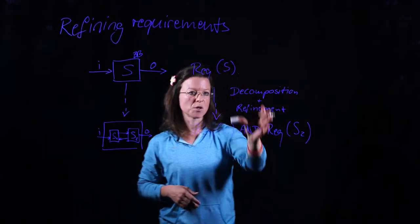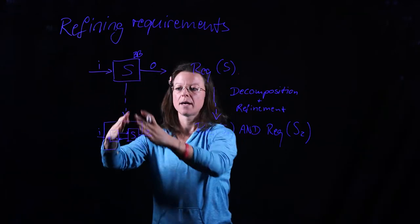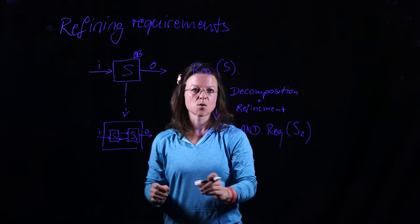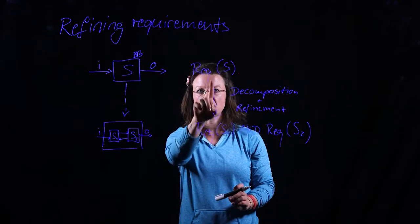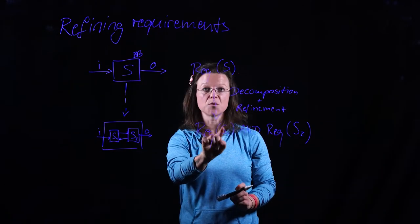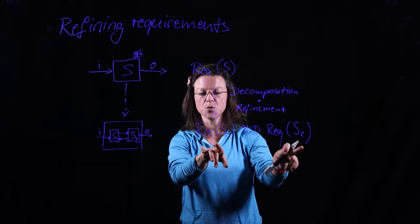So the idea of decomposition is I had one system before and now I have two subsystems. So I need to take my one requirement and understand what does that mean if I rephrase that requirement for subsystem 1 and if I rephrase it for subsystem 2.